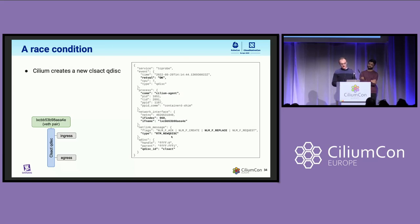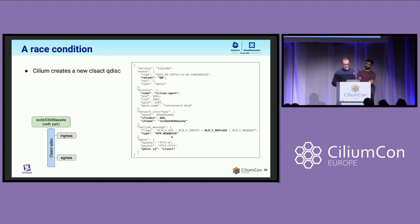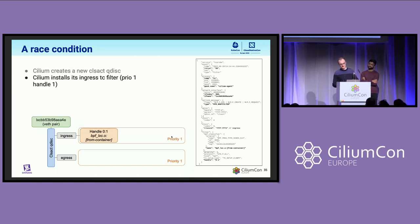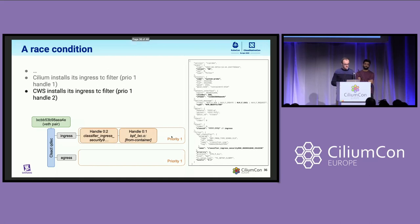Let's go event by event. First, a new interface comes online, and then Cilium creates a new CLS Act QDISC to instrument this specific interface. Then Cilium moves on to installing its own TC programs — specifically on ingress, and as expected, it has priority one, handle one. Then CWS picks up on the new interface. We have eBPF programs to detect when new VEth pair interfaces are registered, so we get notifications from the kernel when a new interface is ready to be instrumented — and this is how we detect the new interface and decide to add our own TC programs as well.